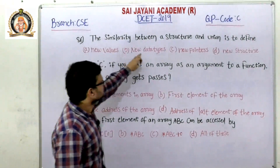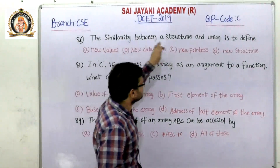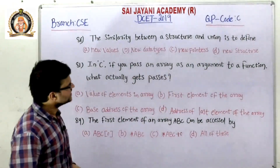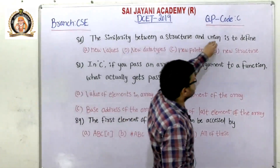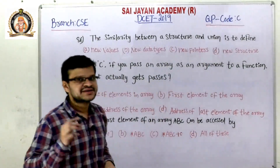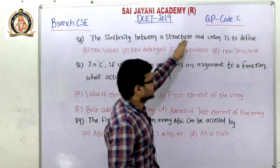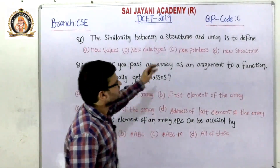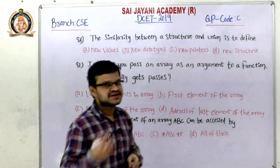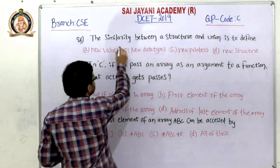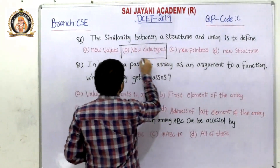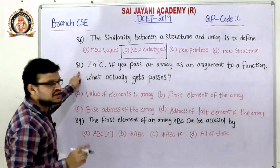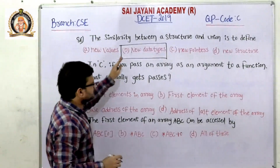Question number 86: the similarity between structure and union. We have four options — option A: new values, option B: new data types, option C: new pointers, option D: new structure. Structure and union are both used to define new data types of different types. So for question number 86, option B — new data types — is the right answer.